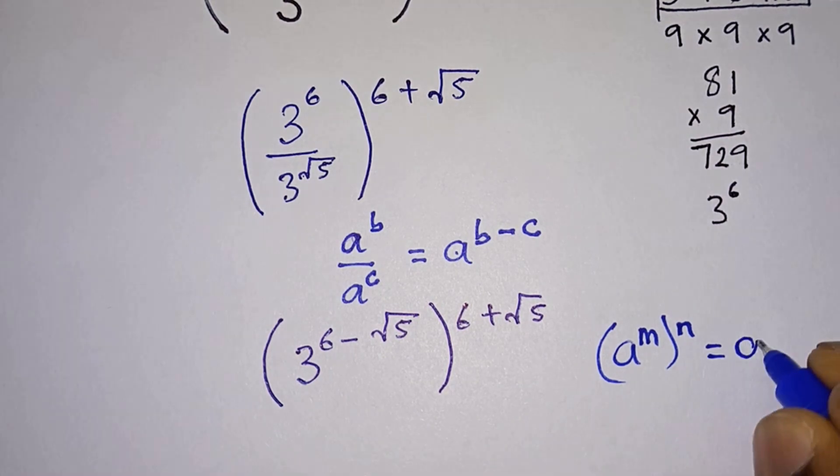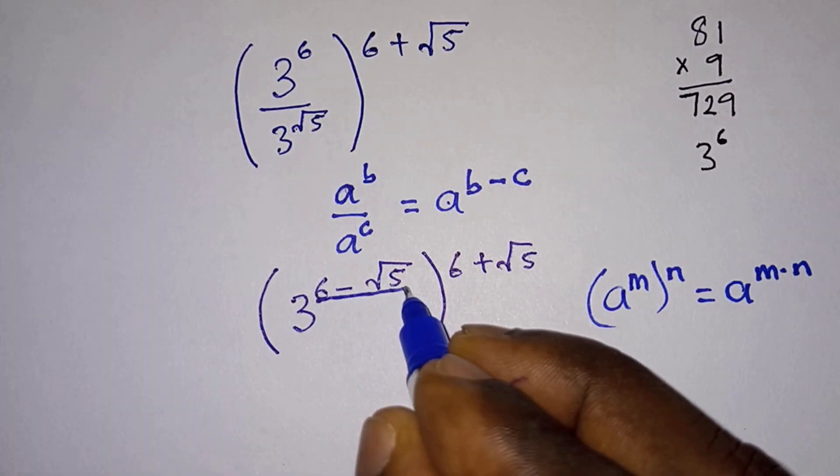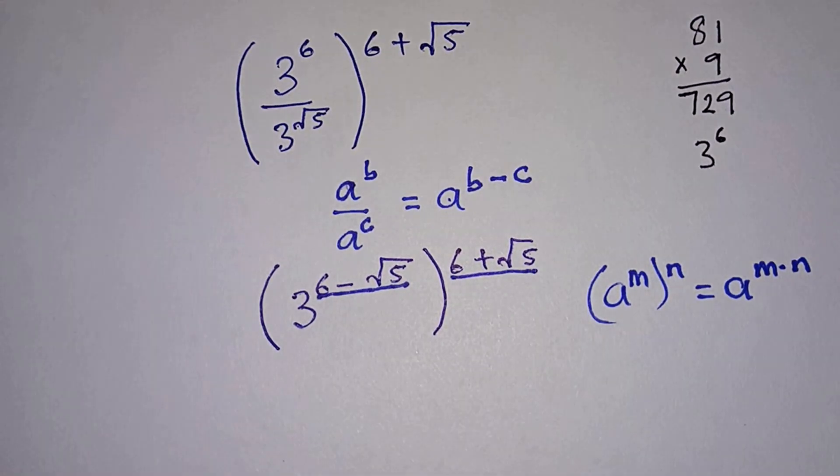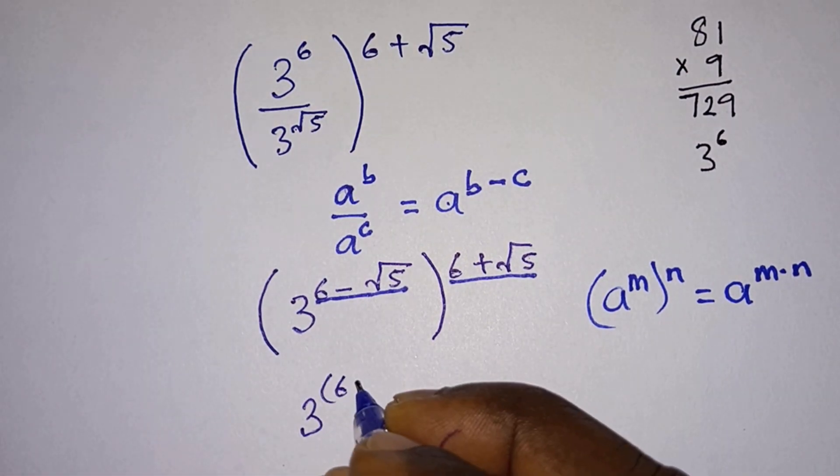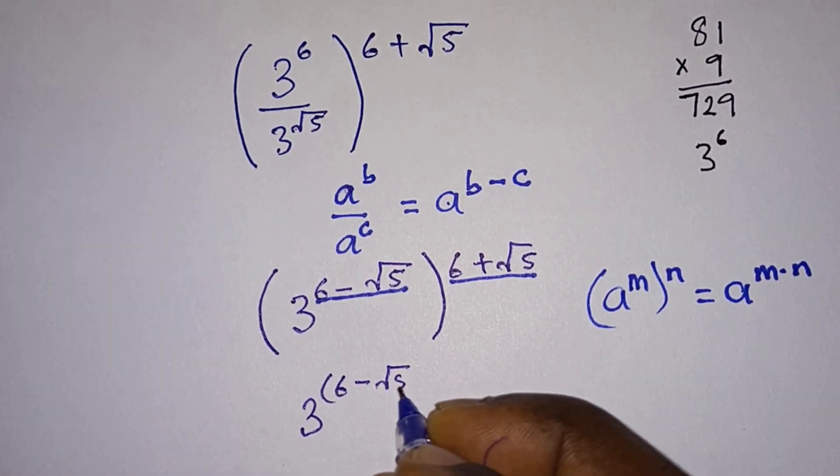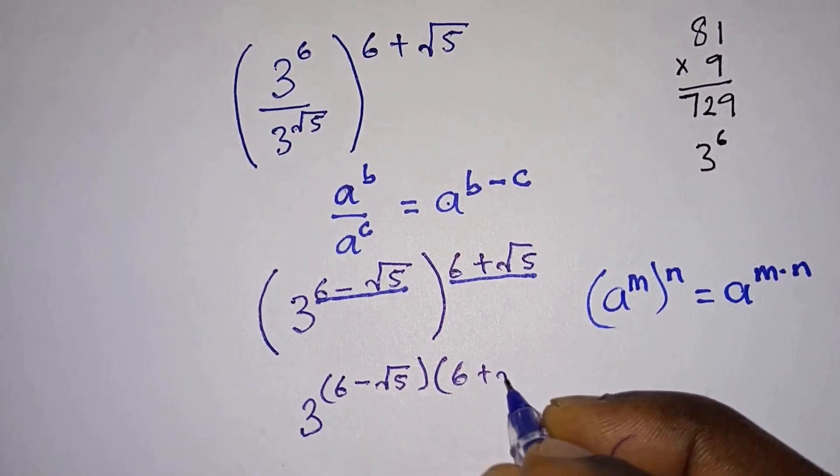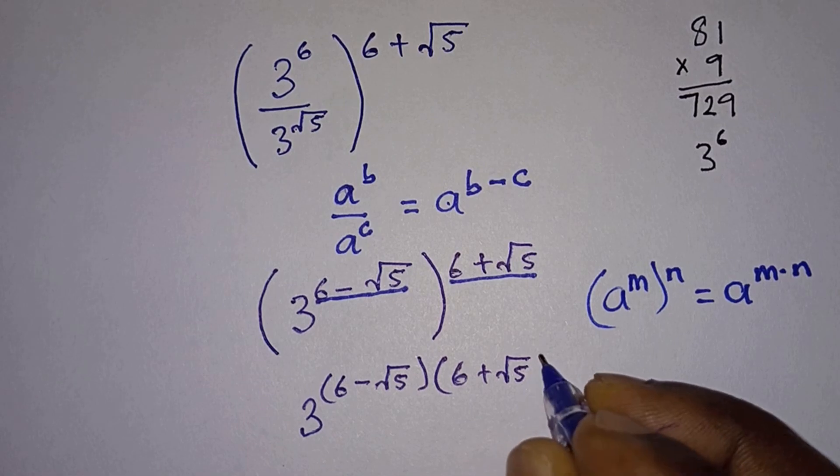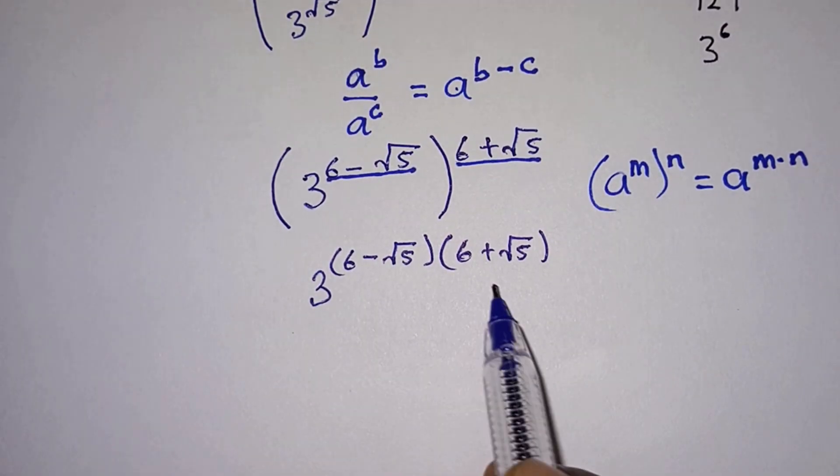So therefore we can consider that we multiply this by this, so we would have 3 to the power 6 minus square root of 5 times 6 plus square root of 5. And we see that we have difference of two squares on the power.